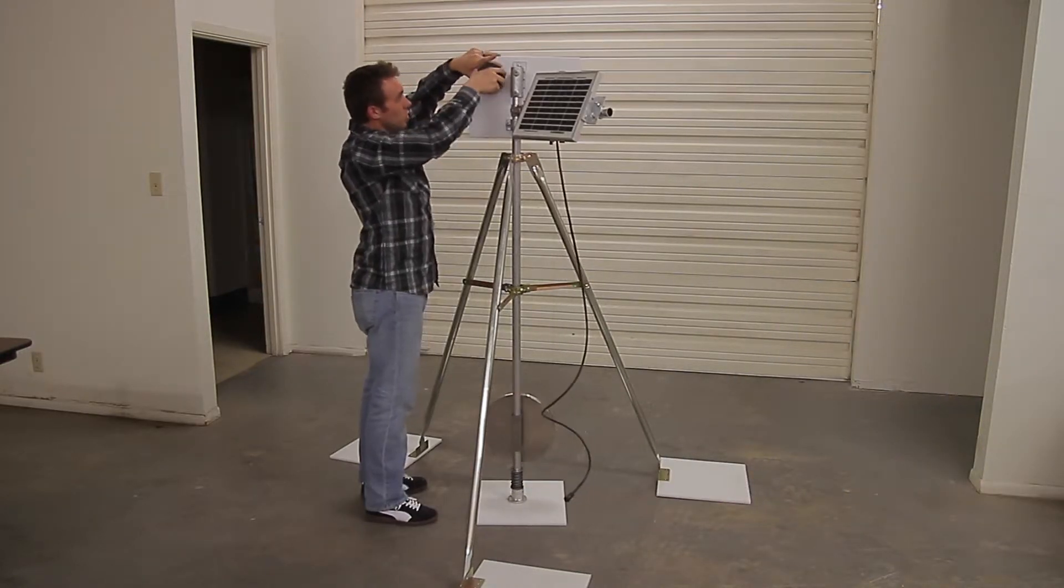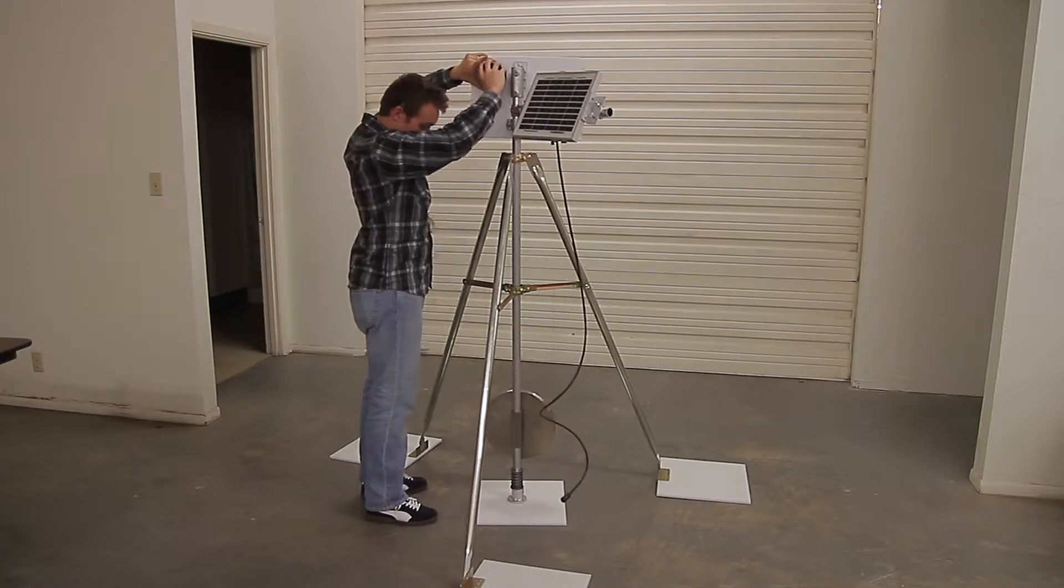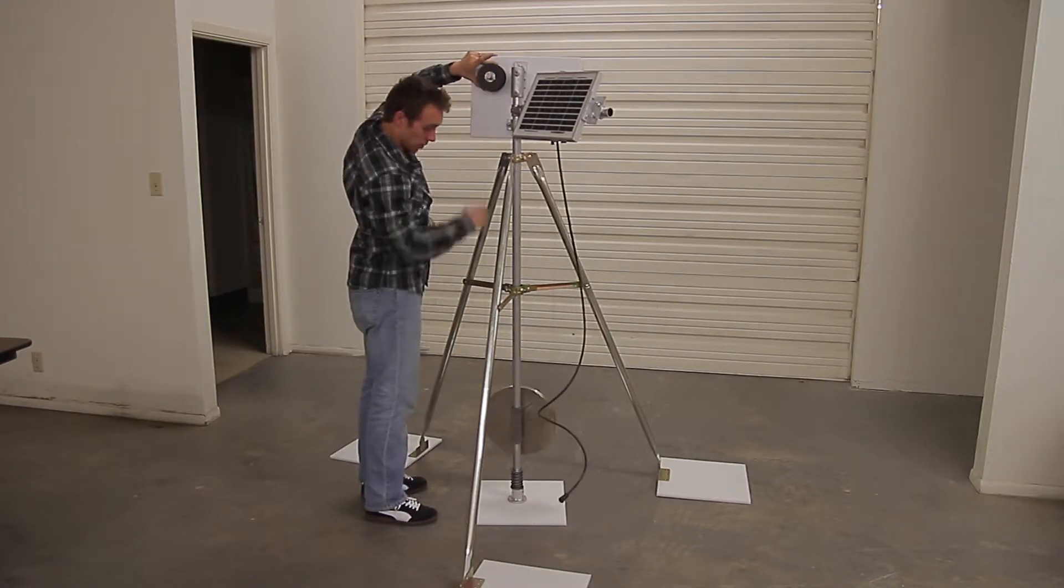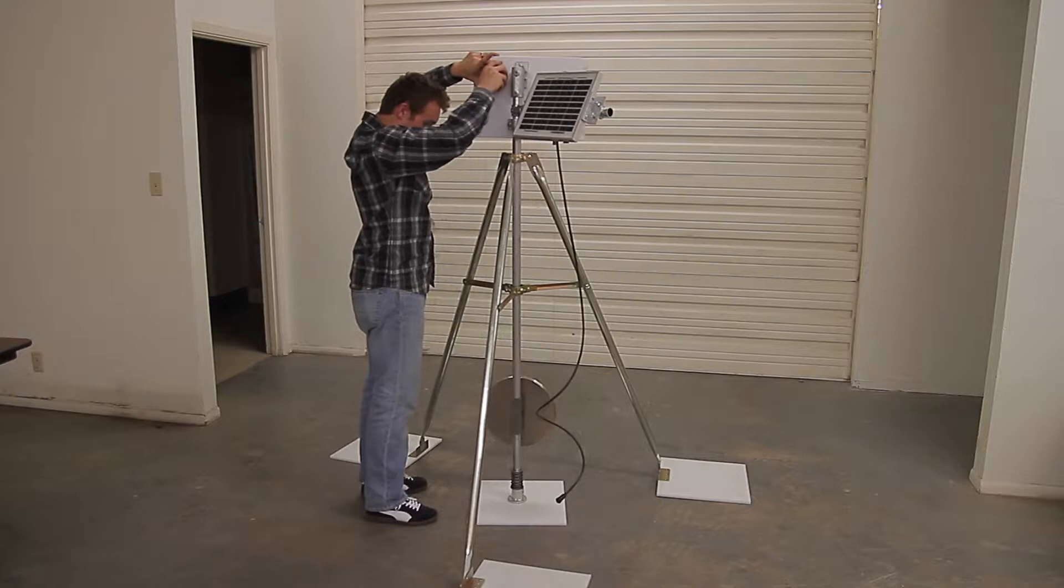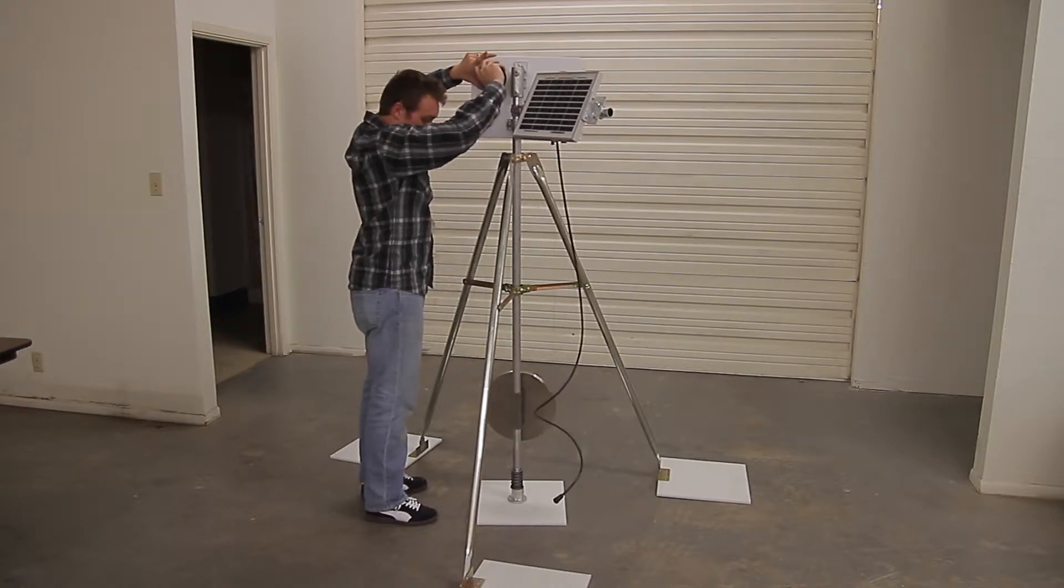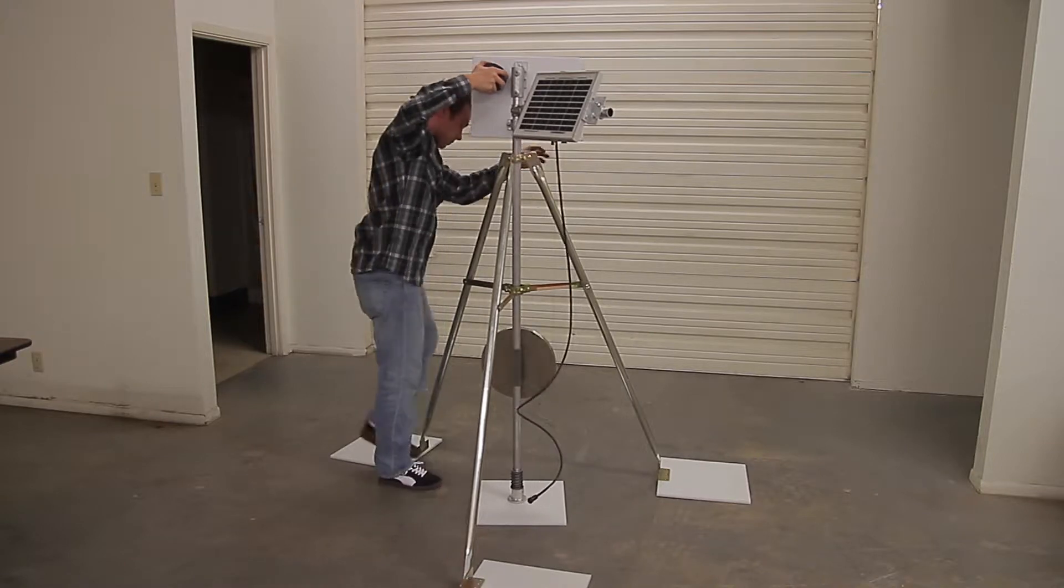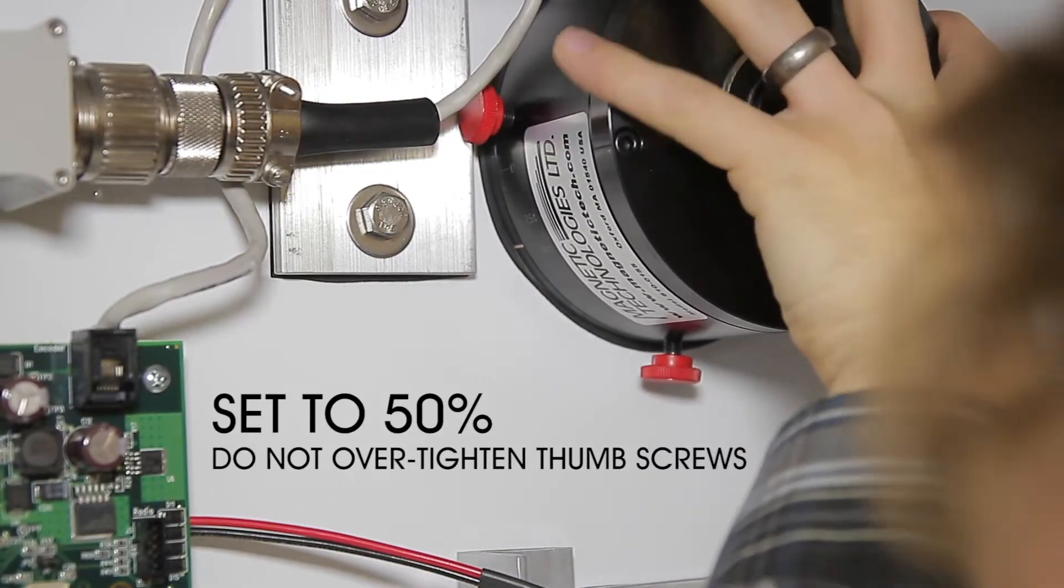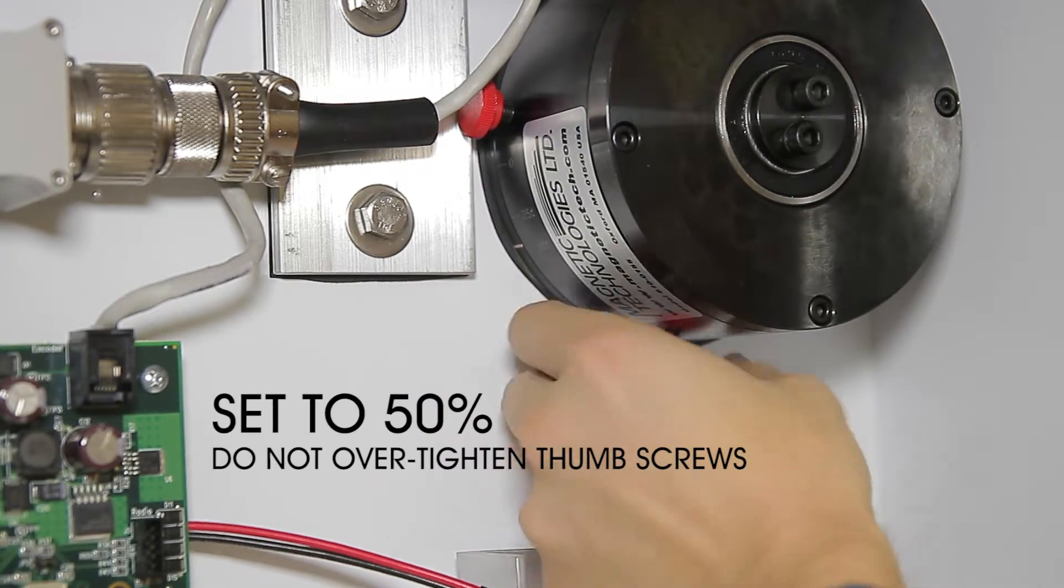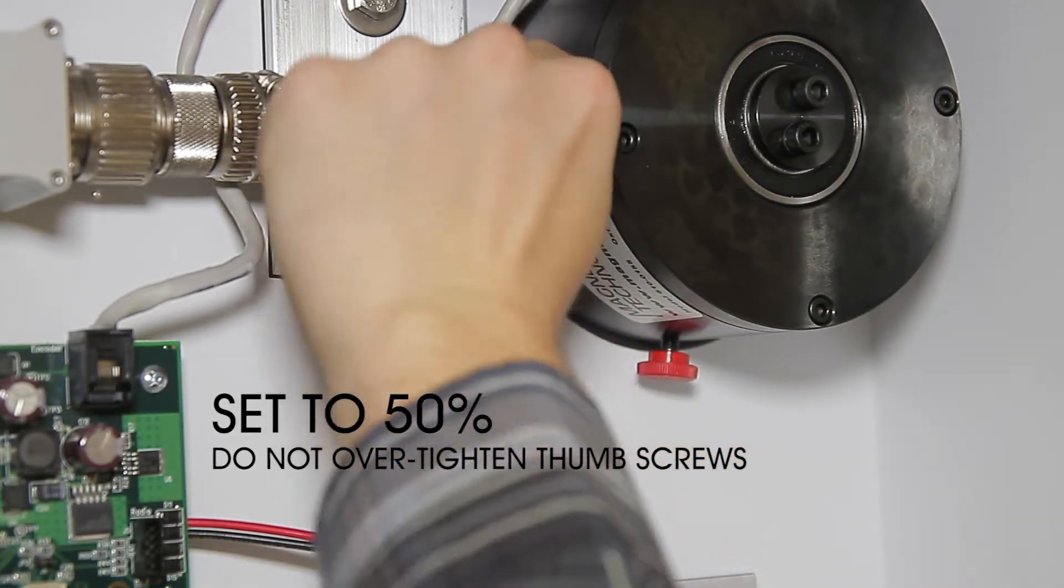You're going to use your left hand as a brake and the right hand to pull it, and keep going so that you raise the weight up so that it's a little above halfway. Now open up the box. Set this at 50% and then finger tighten these thumb screws.